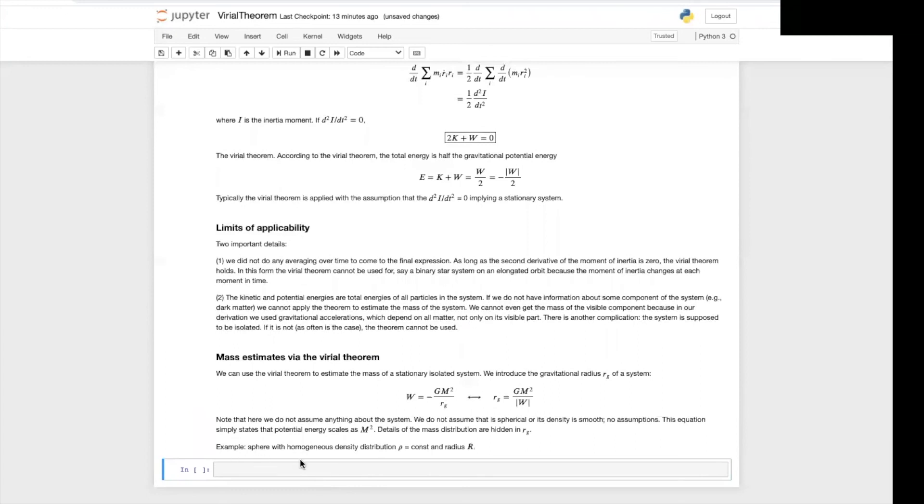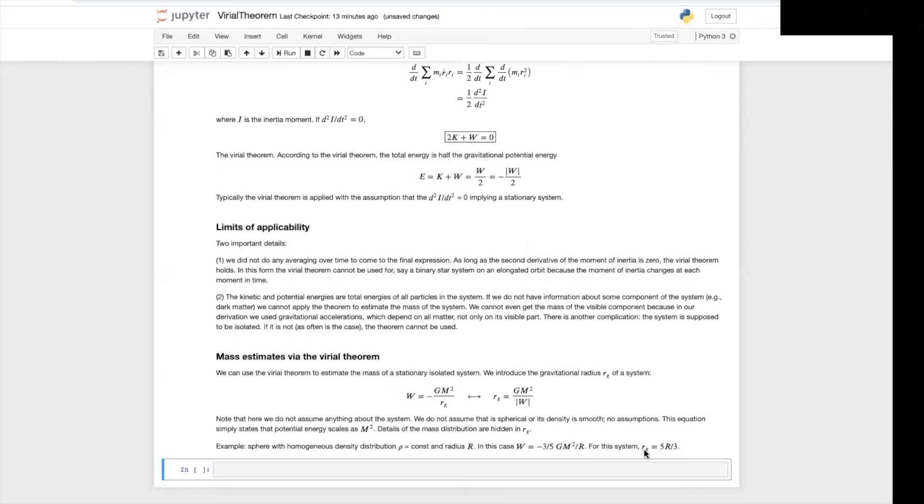For example, a sphere with homogeneous density distribution, rho equals constant, and radius r. In this case, the gravitational energy is minus three-fifths of gm squared over r. For the system, then the gravitational radius is five-thirds of the radius.